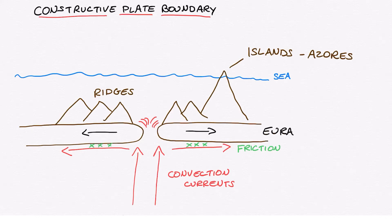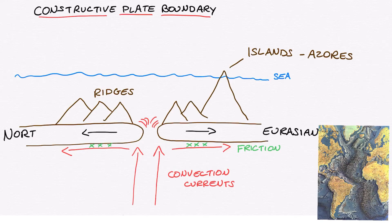In fact, the most famous of these constructive plate boundaries and the ridges formed on it is the mid-Atlantic ridge, which runs all the way up the middle of the Atlantic Ocean and extends into Iceland.